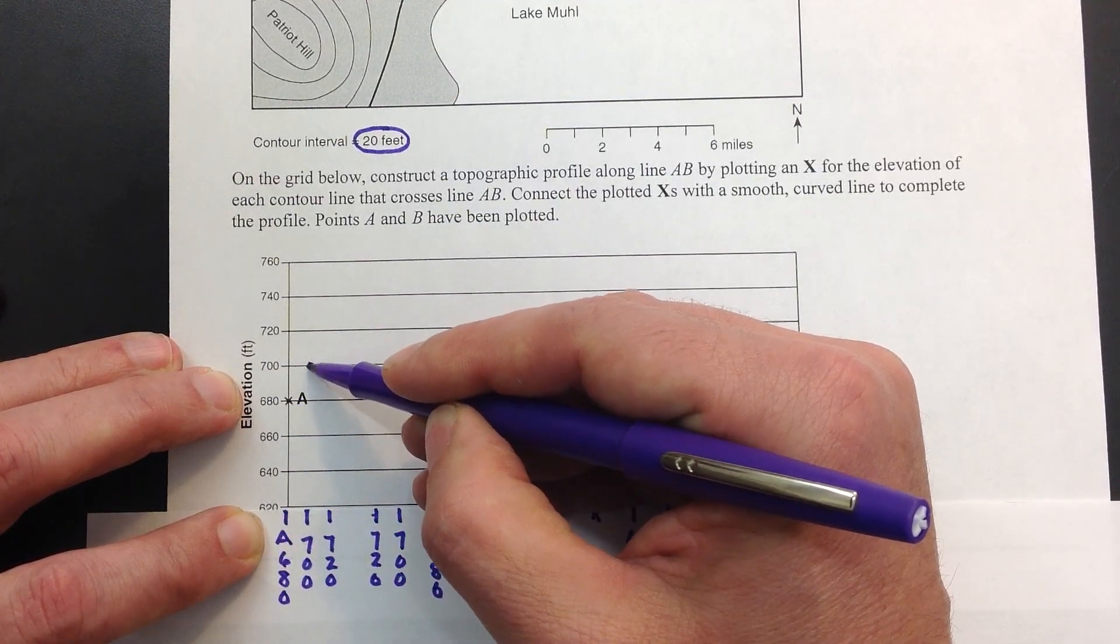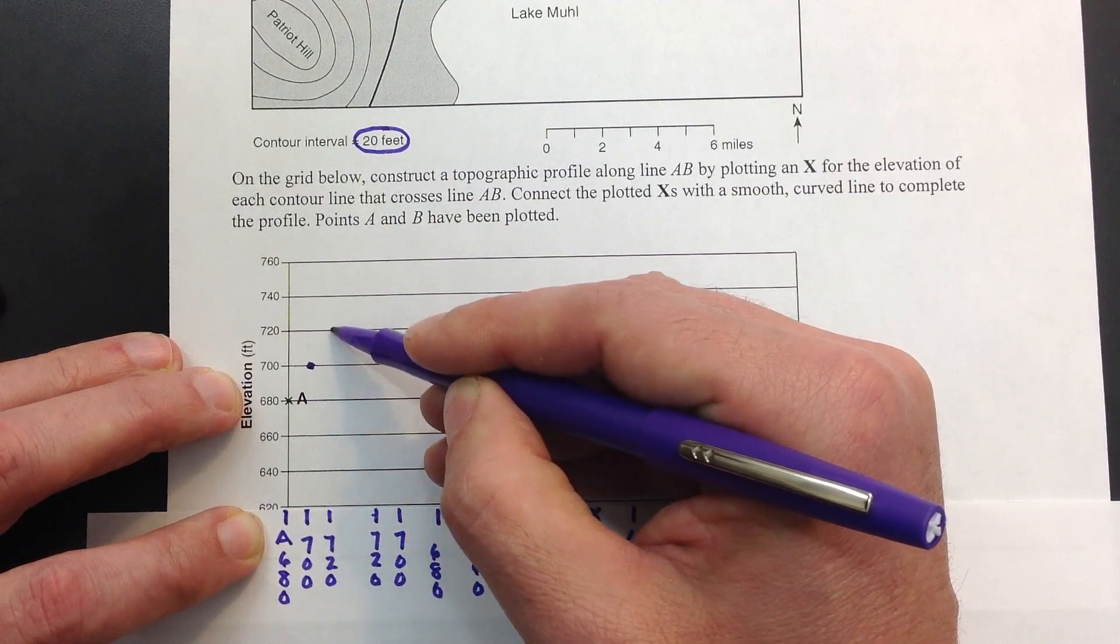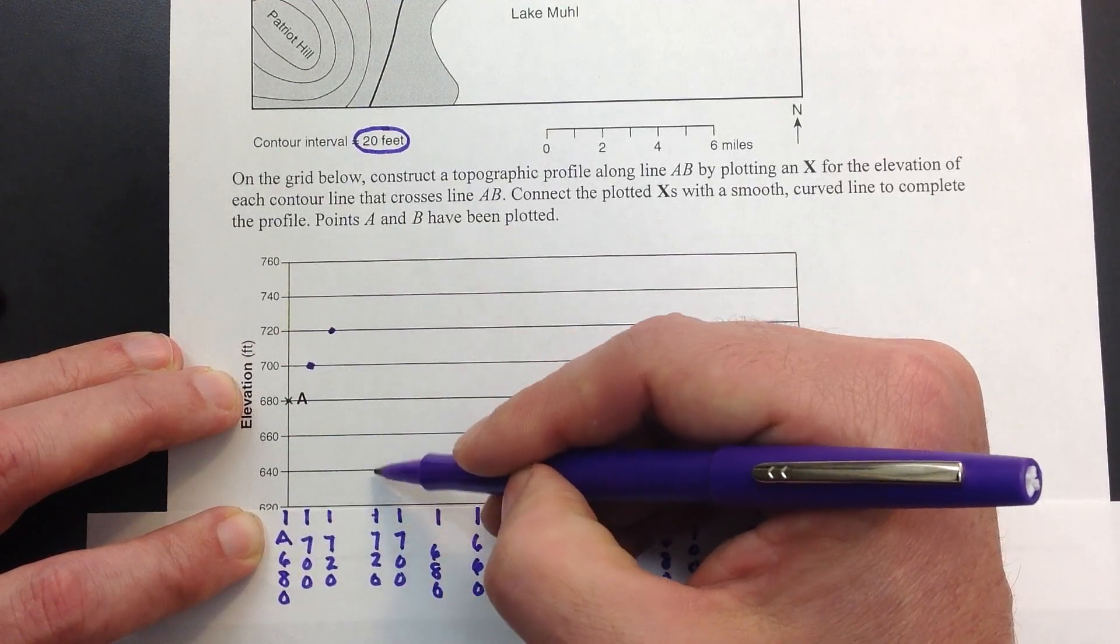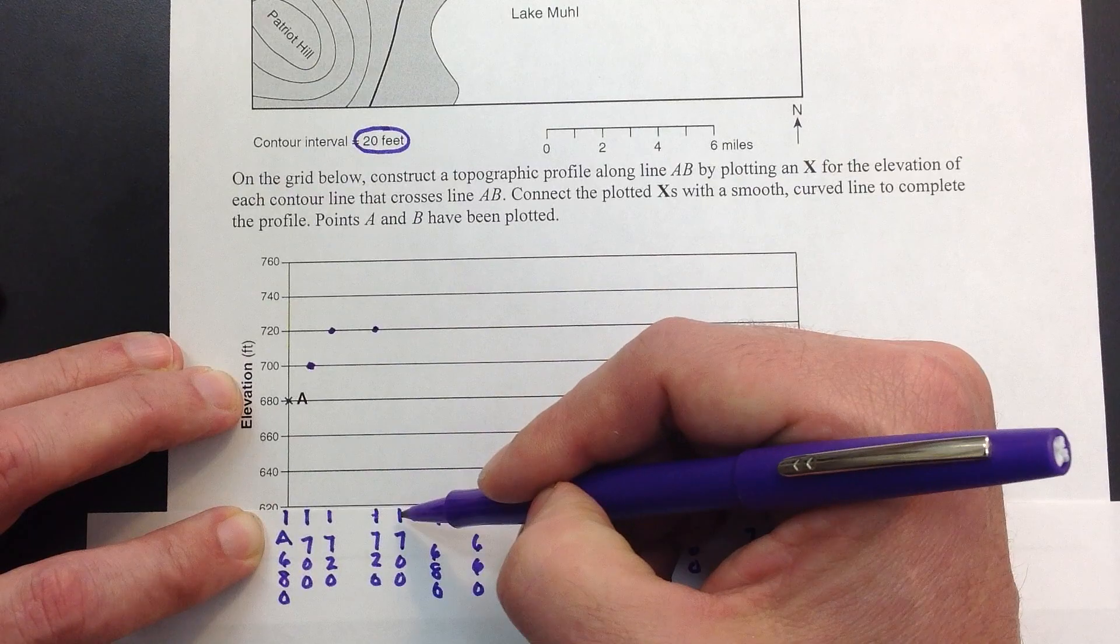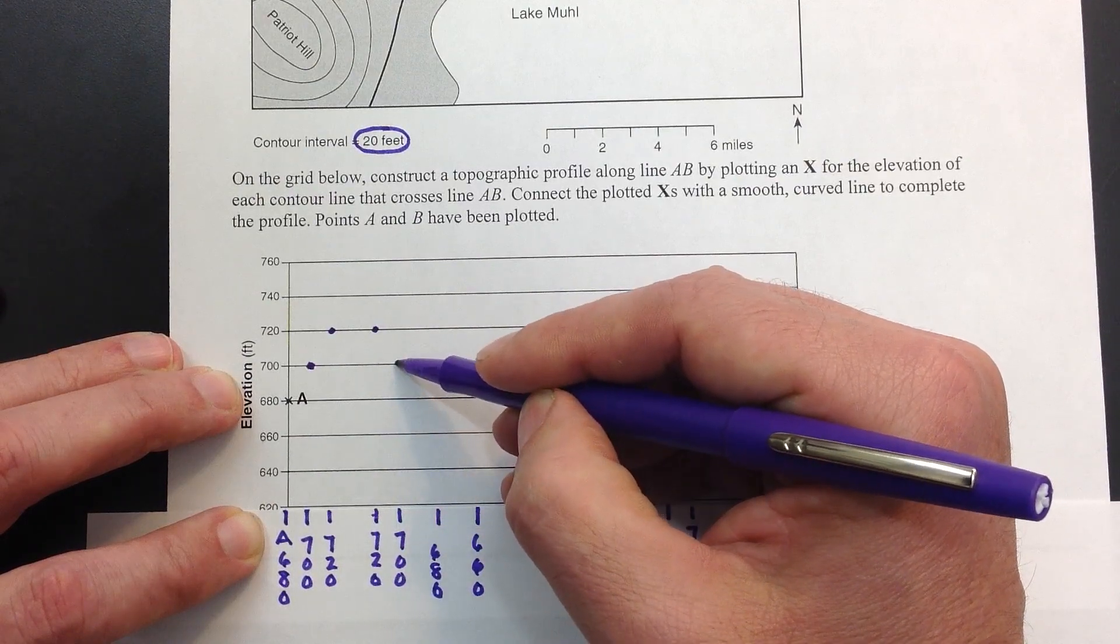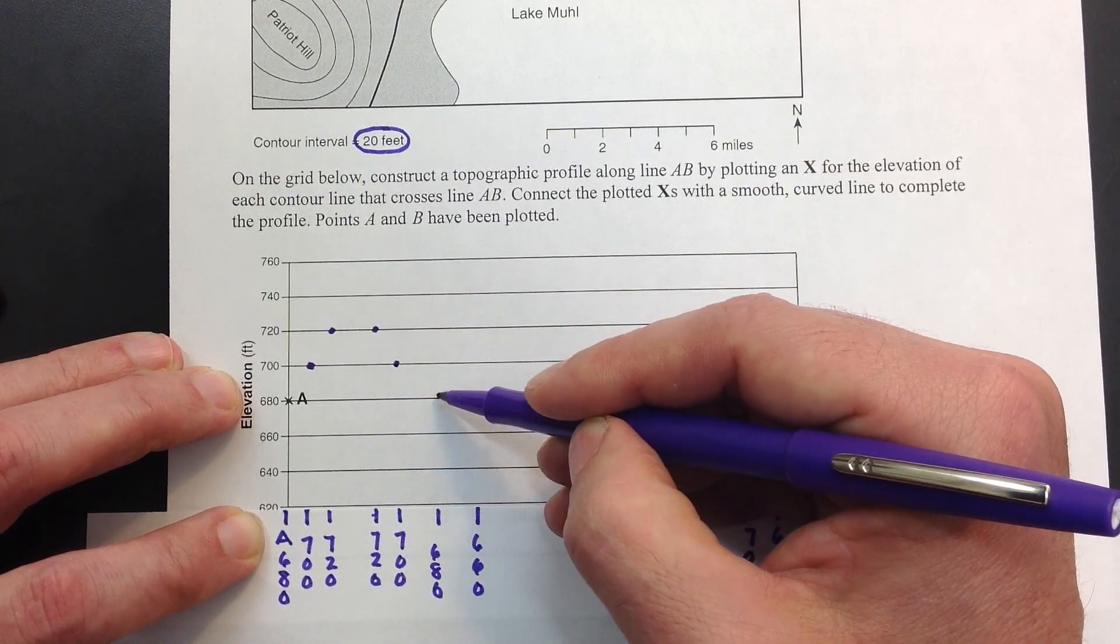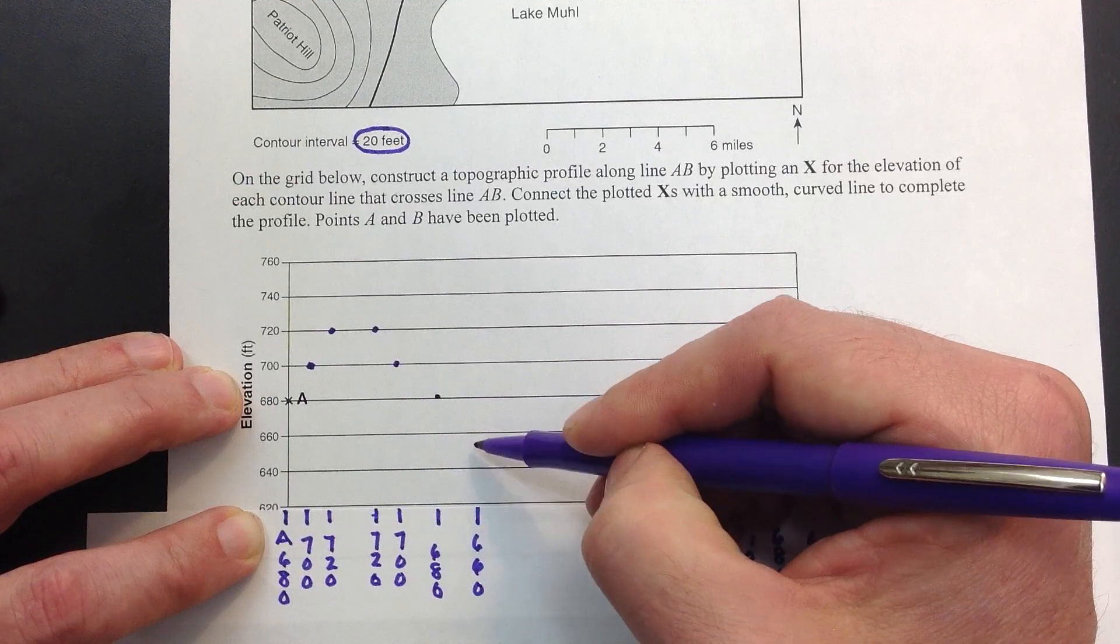700, bring it straight up. 720, bring it straight up. 720, bring it straight up. 700, bring it straight up. 680, bring it straight up. 660, bring it straight up.